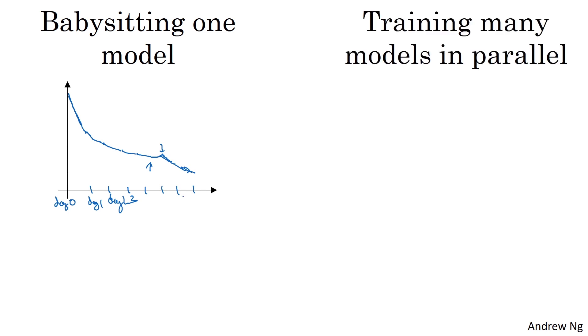The other approach would be if you train many models in parallel. So you might have some setting of the hyperparameters and just let it run by itself, either for a day or even for multiple days. You may get some learning curve like that. And this could be a plot of the cost function J or cost of your training error or cost of your dev set error, but some metric that you're tracking.